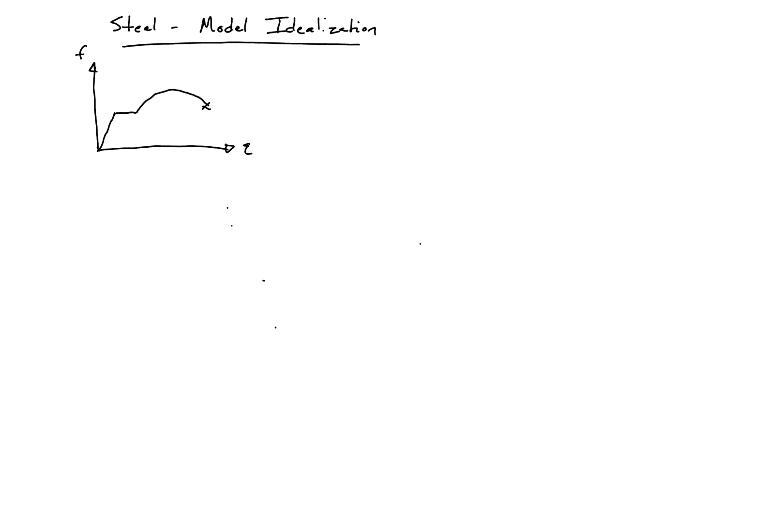The first is what we call an elastic-perfectly plastic idealization. Essentially, for this curve, we assume that we have an elastic region and a plastic region, and this is our curve.